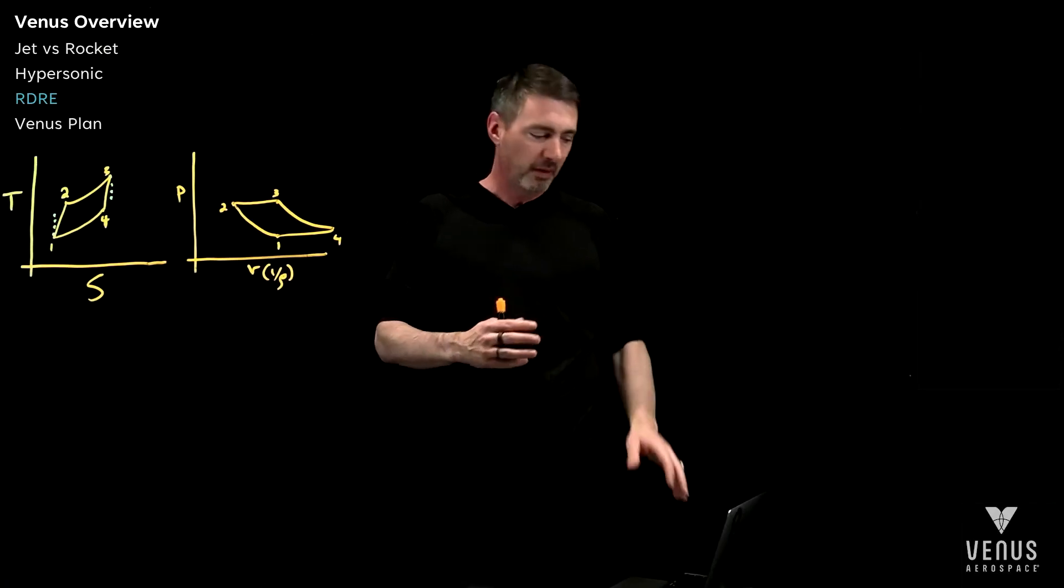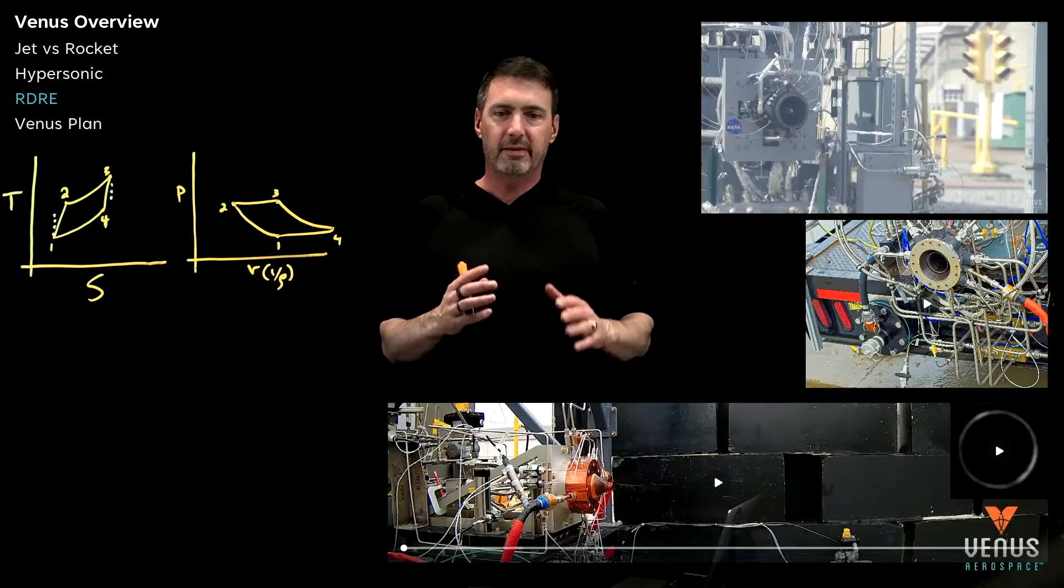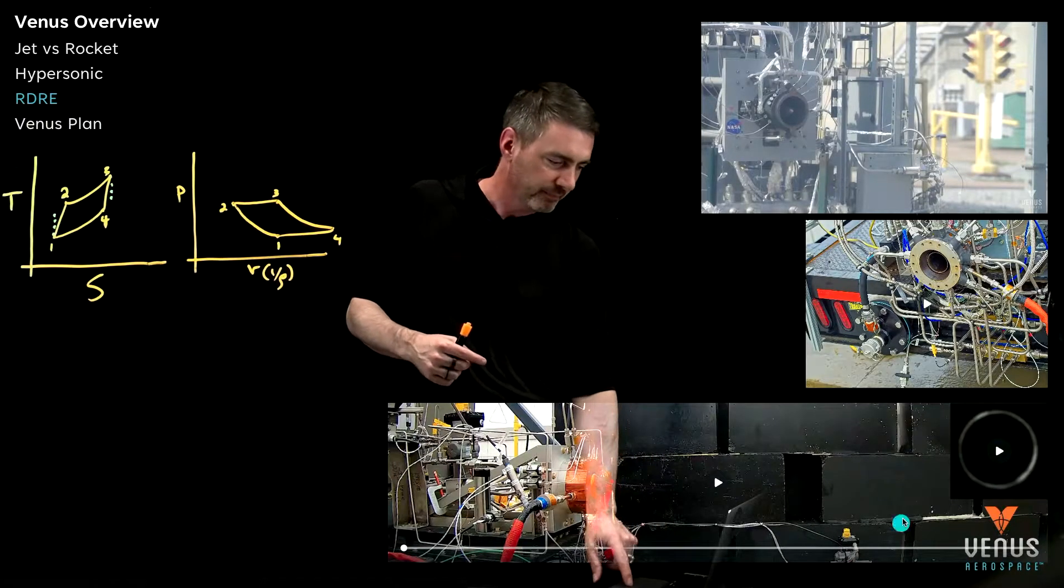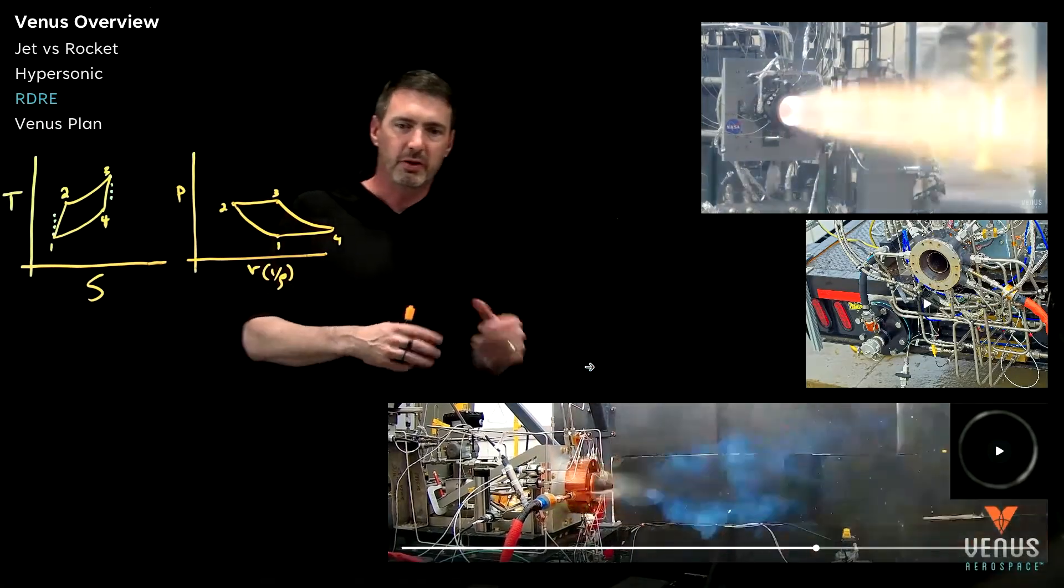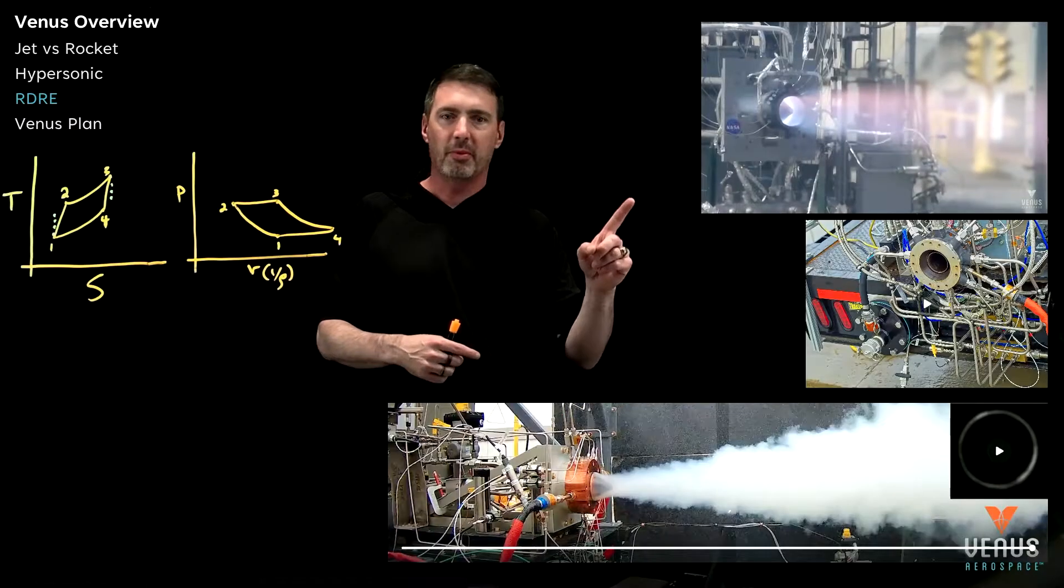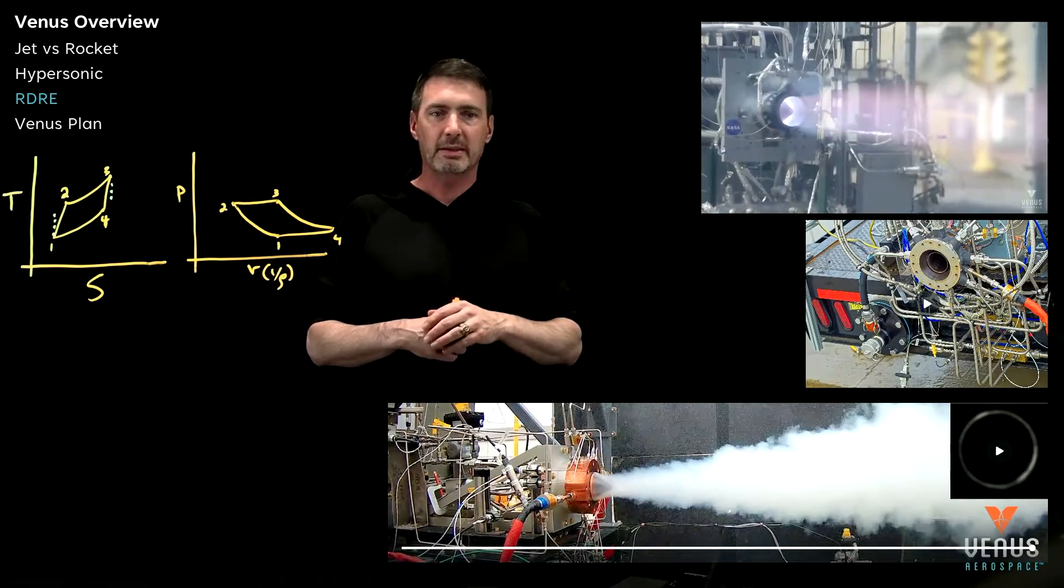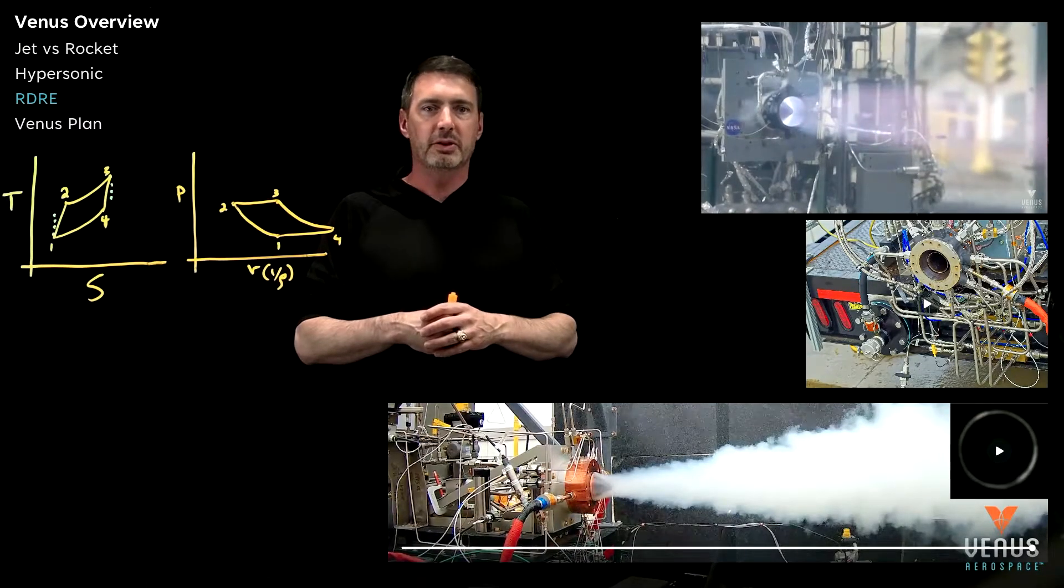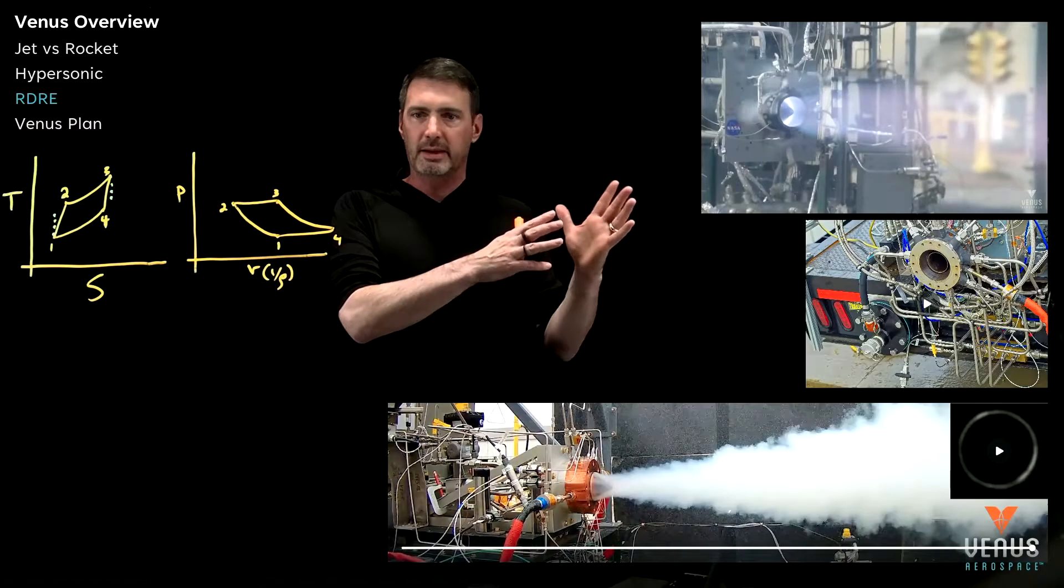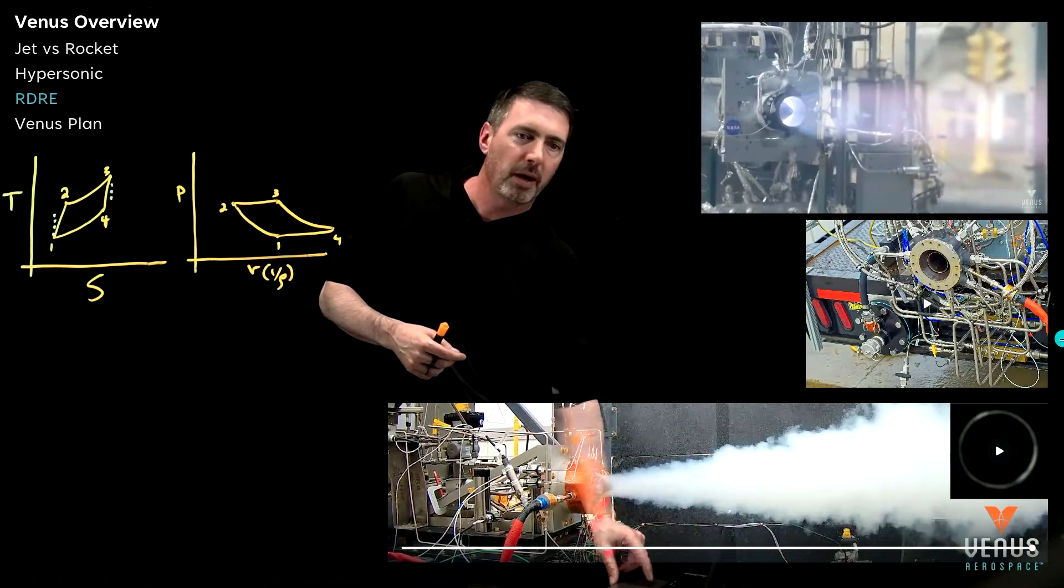But first, I want to just remind you of some of the detonation engine work we've done. This is some of the videos I've shared previously. This is our kind of highest thrust, 2,000 pound class engine. On the top right, already going, is the LOX methane engine that we're working with NASA on. You can see that long duration region cooled engine. NASA's shared some of that video. We did a press release on that as well.